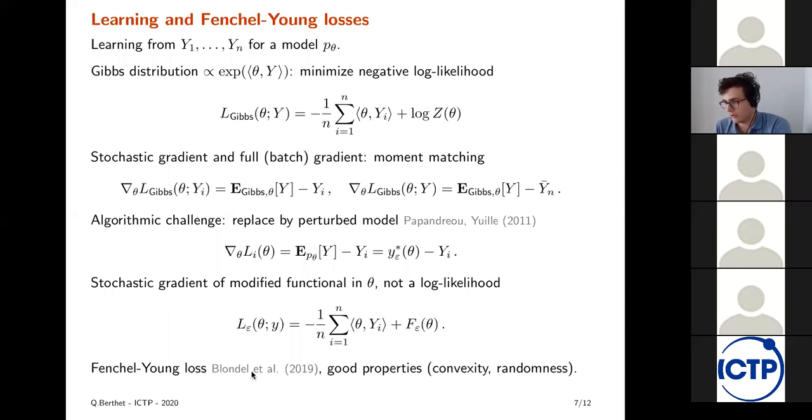Then you recover something that's called the Fenchel-Young loss that has very good properties. So it is convex in theta. The randomness plays nicely. So if the Ys are random here, the randomness only acts linearly on this loss. And it is minimized at the correct value if the Yis indeed follow a model with some P theta 0. It will be in the large sample limit minimized at theta 0.